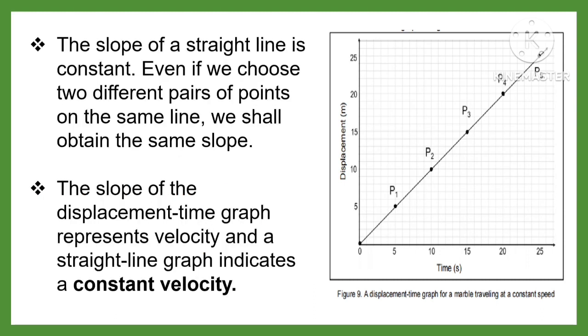The slope of a straight line is constant. Even if we choose two different pairs of points on the same line, we shall obtain the same slope. The slope of the displacement-time graph represents velocity, and a straight line graph indicates a constant velocity.